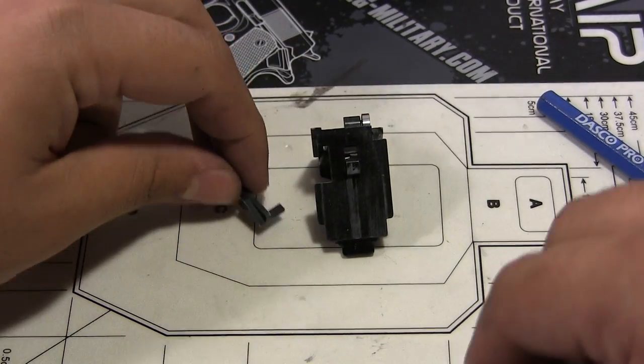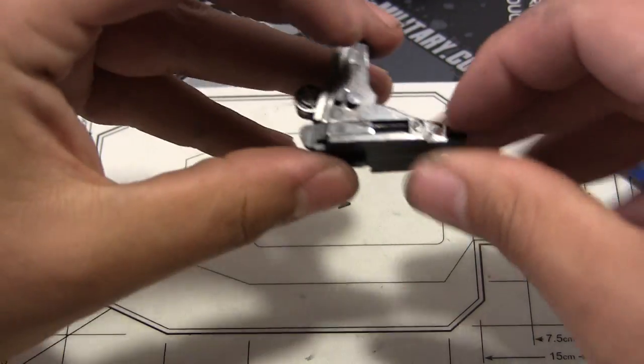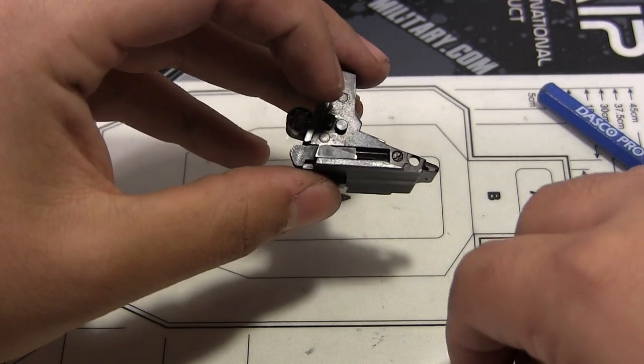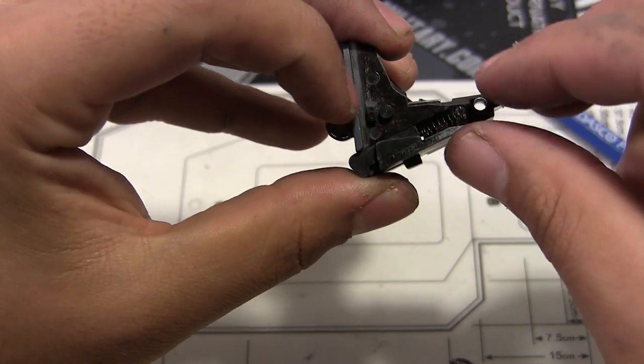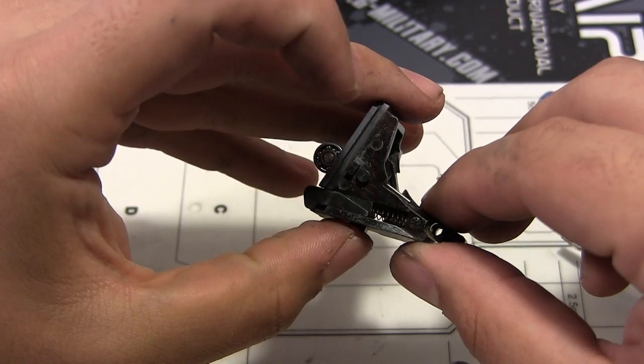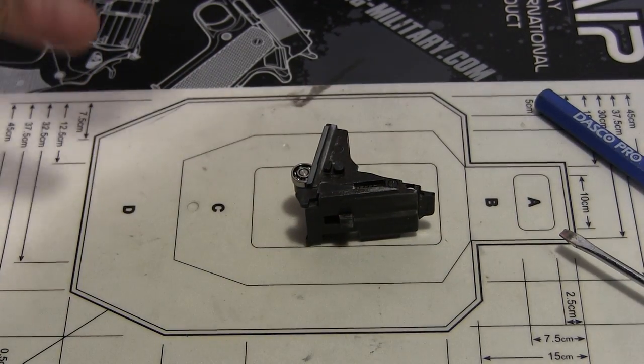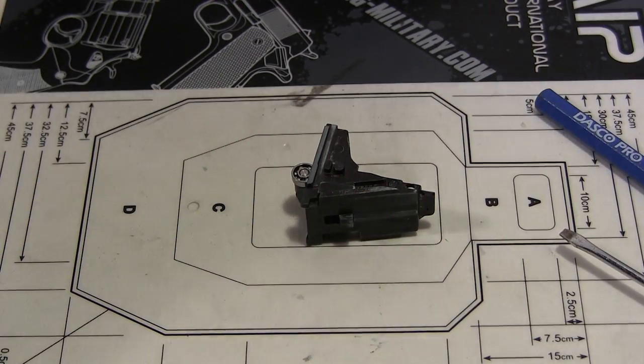Oh sorry, I forgot this part. This part goes right here, and then you just put the spring underneath it. There you go, that's how it looks. I hope that helps you guys. And check the next video for the complete reassembly.